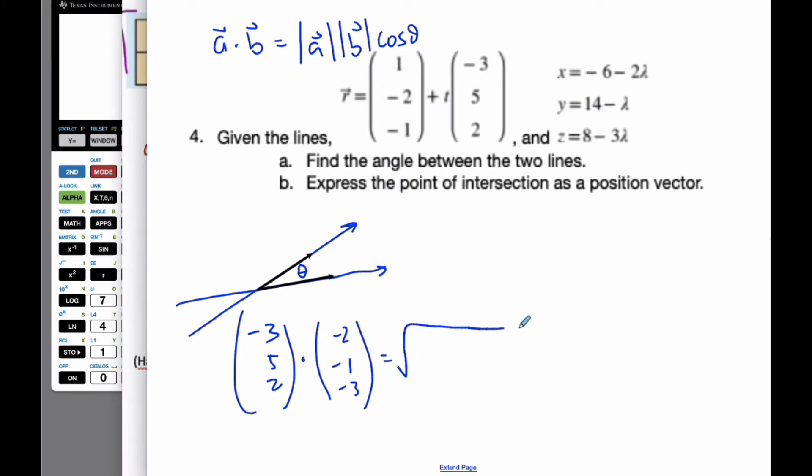This is going to be equal to the square root of, well, negative 3 squared, plus 5 squared, plus 2 squared, and the square root of negative 2 squared, negative 1 squared, plus negative 3 squared.